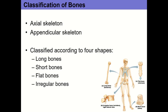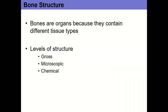Bones are organs because they contain multiple different types of tissue. A tissue is a group of the same type of cell working together. But in a full bone you have not only osseous tissue but also arteries, nerves, veins, and lymphatic tissue — and because you have those different types of tissue, that's what makes bone an organ.